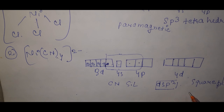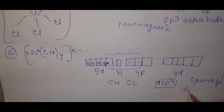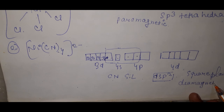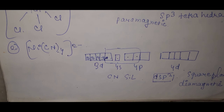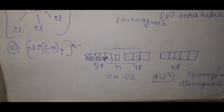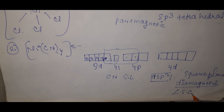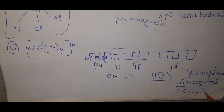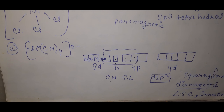[Ni(CN)₄]²⁻ is diamagnetic because there are no unpaired electrons. Diamagnetic complexes form low spin complexes and inner orbital complexes. All three conditions are satisfied here.